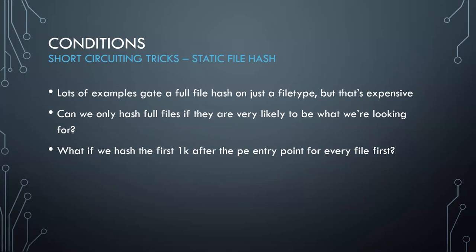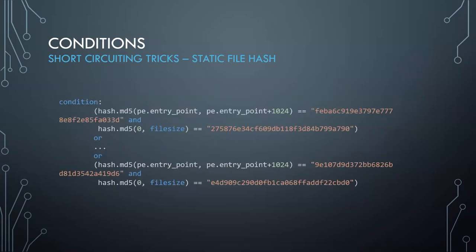Static file hashes in particular are really expensive, but a lot of IOCs are just file hashes. What can you do? Well, what if we do what AV engines do — start with the first thousand bytes after the entry point? Instead of computing the full file hash first, just hash a thousand bytes from the entry point.